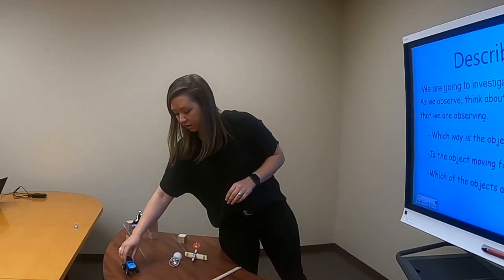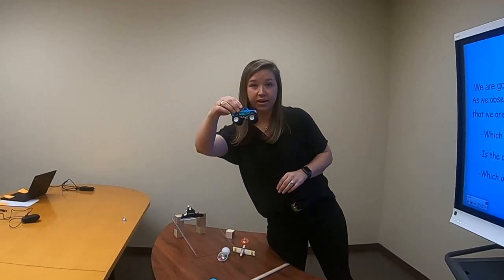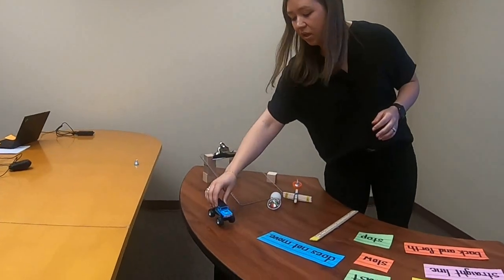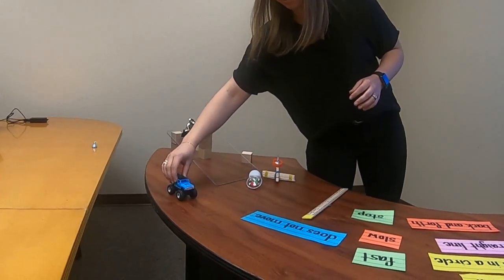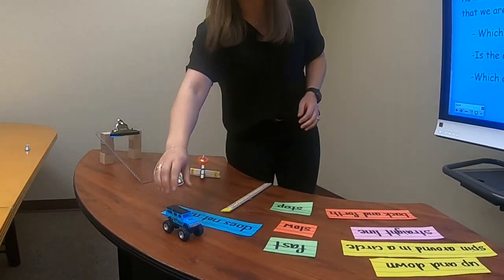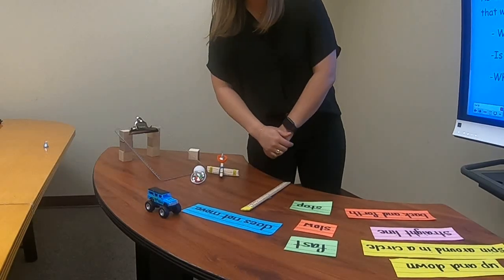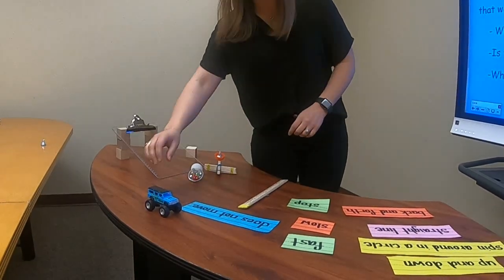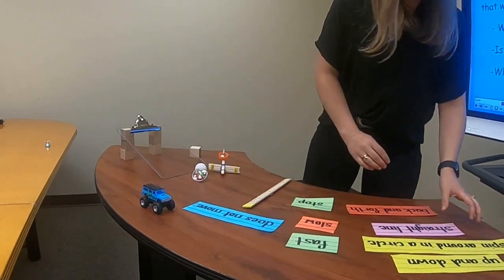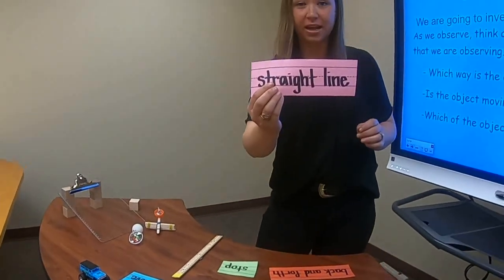My third object is a toy car. And so we all know we've been driving in cars before, right? So if I pull my car back, watch the motion of my car. Watch it one more time. Is it going in a zigzag line? No, you're right. It's going in a straight line.